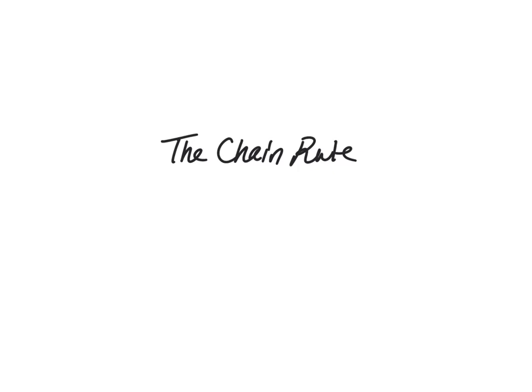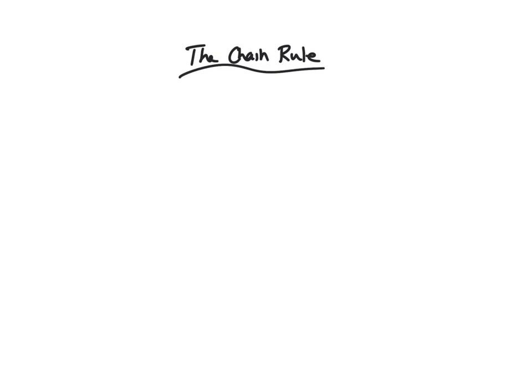Hello everyone. In this video we will be discussing the chain rule. The chain rule allows us to deal with compositions of functions. We recently went over the product rule and quotient rule, which allow us to deal with products and quotients, but we have no way to deal with functions that look like this. So that's what the chain rule is for.